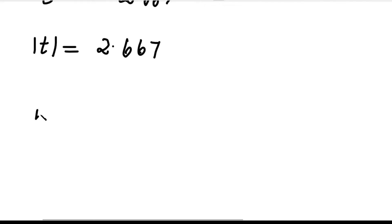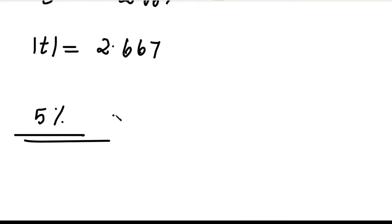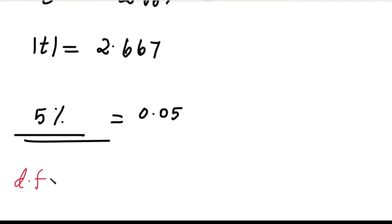In the first case, the level of significance is 5% (0.05). This is a two-tailed test. The degrees of freedom is n - 1 = 16 - 1 = 15. So degrees of freedom = 15.